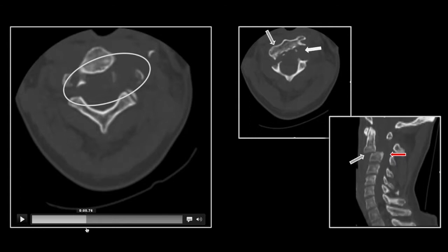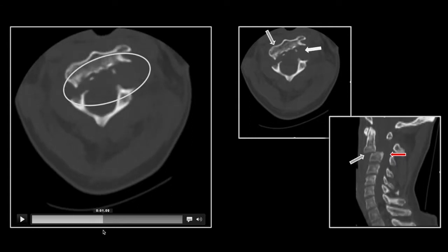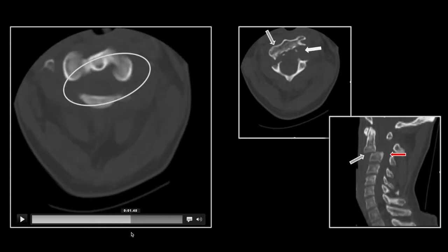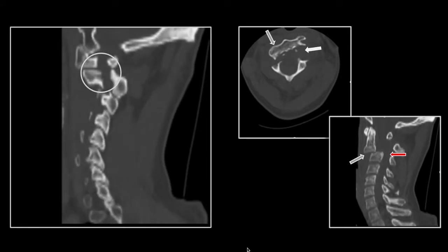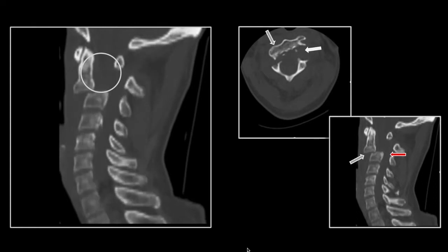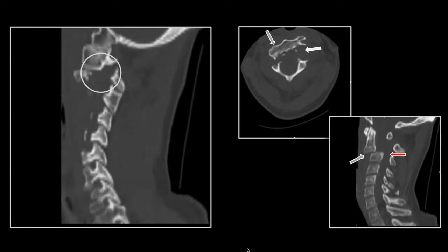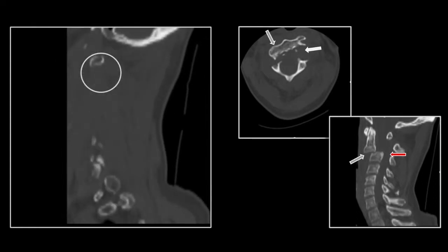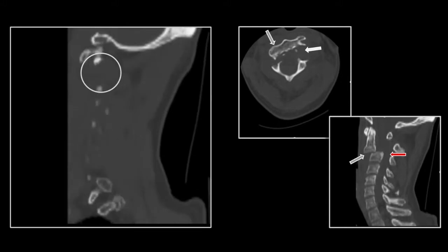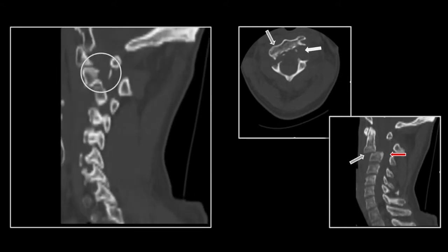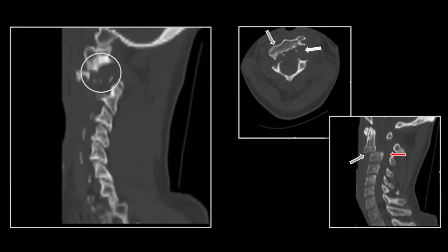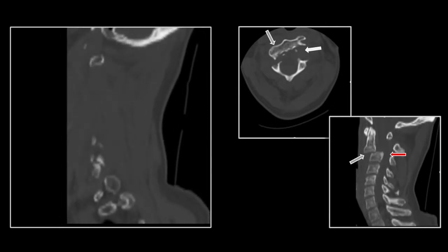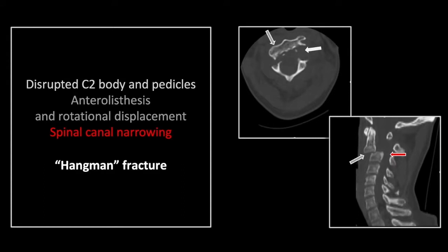There are the disrupted pedicles and the rotational anterior displacement of the C2 vertebral body. There is one pedicle and the other pedicle defect. You can appreciate that significant anterolysthesis. That is a classic Hangman fracture.